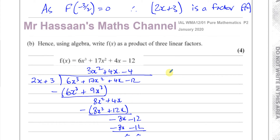Therefore this is another factor, so the other factor is 3x squared plus 4x minus 4. Now I need to factorize 3x squared plus 4x minus 4. There are different ways to factorize such an expression — one is by splitting the middle term, another is guess and check. I like to use a grid method, sometimes called the window method. Whichever method you prefer is absolutely fine.